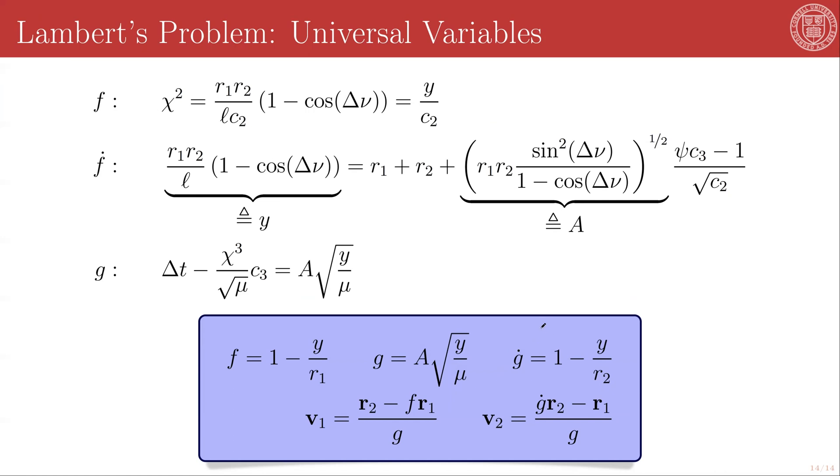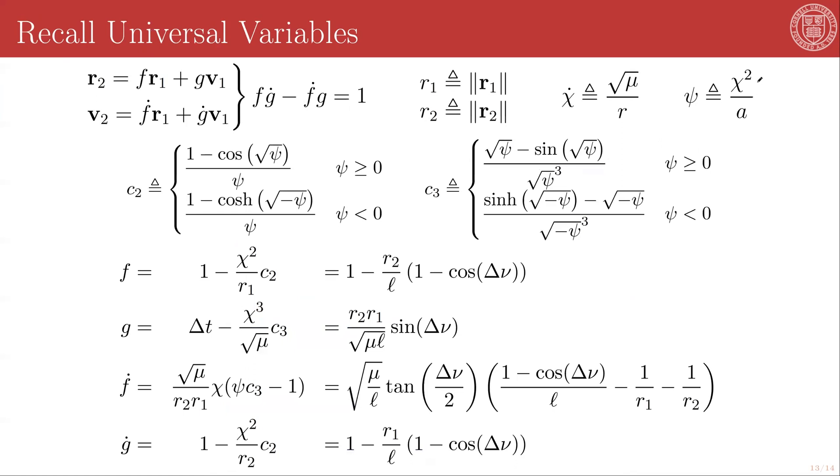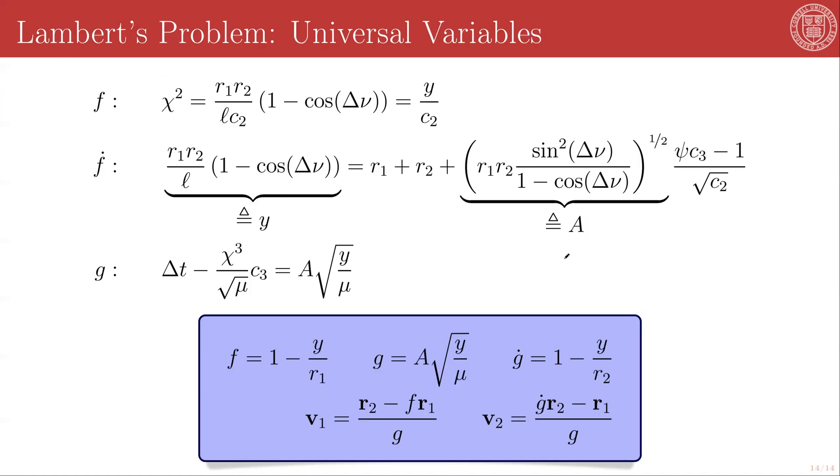So in practice, what you do is you assume an initial value for psi, for this variable here, which is chi squared over a for transfer orbit semi-major axis a. You solve for delta t, you compare it to the desired delta t of your problem statement, and then you update and iterate until the solved delta t matches the input delta t.